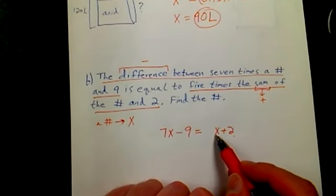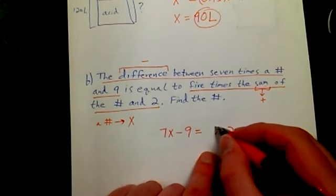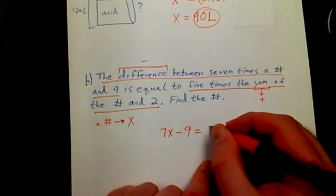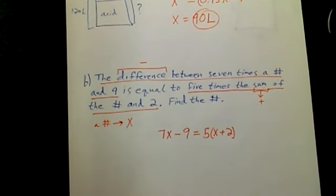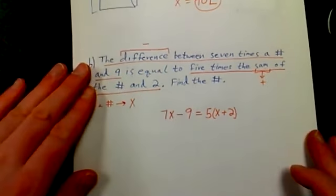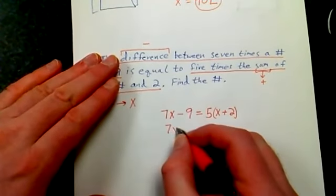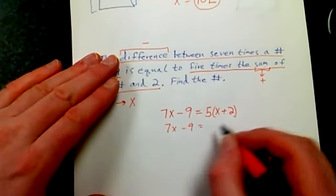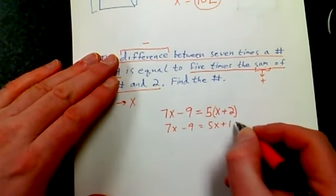Well, it's not just five in front of the X because then I'm not including the two. That's where our handy-dandy parentheses come in. That's our equation. It looks just like a lot of them that are in the last section. So let's go through this: 7X minus 9 equals - might as well distribute - 5X plus 10.